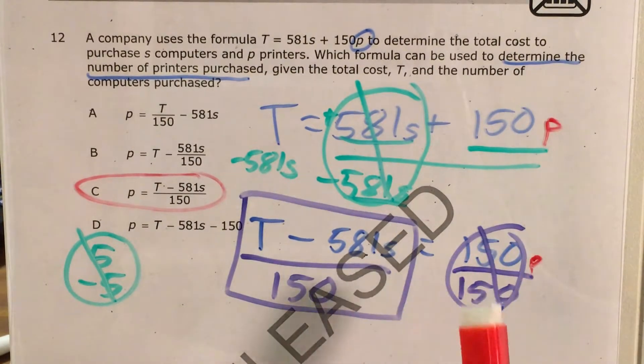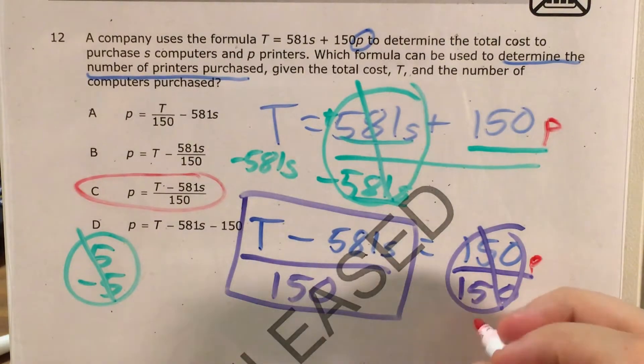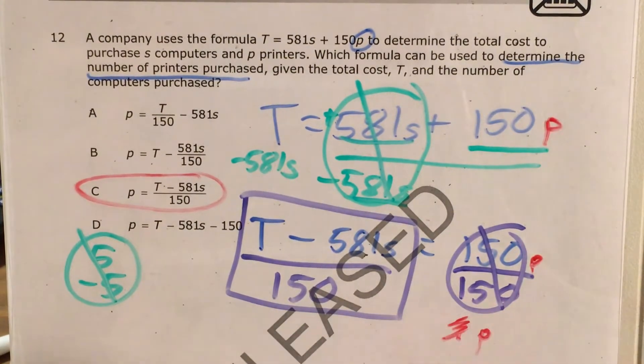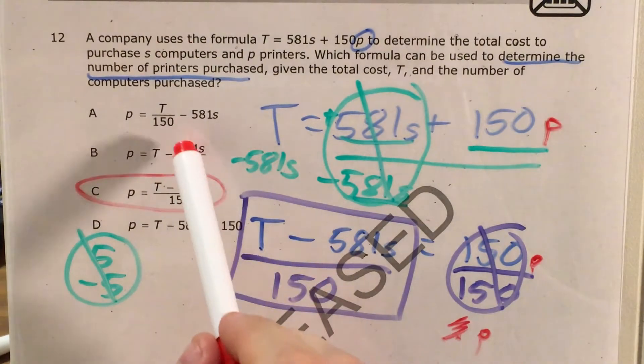It works over here to just cross these out, because 150 divided by 150 just equals 1, so this would get me 1p. And I wouldn't even really need to write the 1 here. I could just write P. But over here, we had to take 150 and divide this entire side of this equation by it. So it couldn't be choice B.